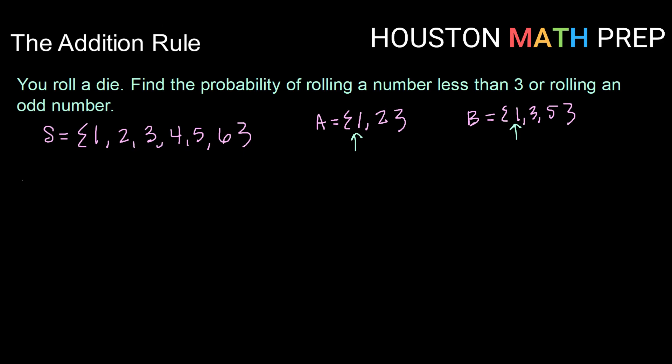When we calculate the probability of rolling a number that is less than 3 or odd, we're going to calculate the probability of a number less than 3 plus the probability of odd minus the overlap. So the probability of less than 3 and odd.